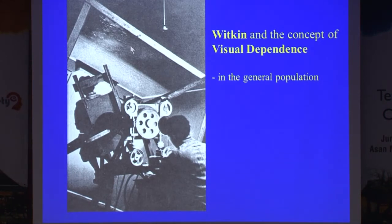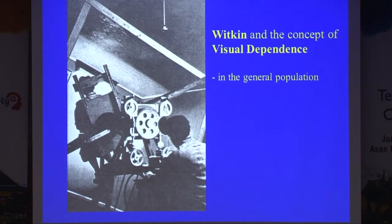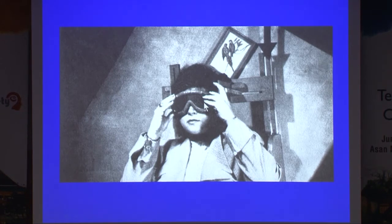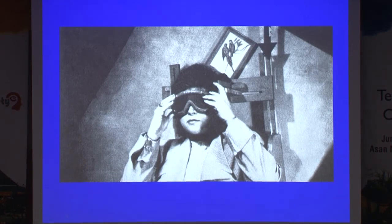What Witkin had was a room that could be tilted, and subjects sat on a chair that could also be tilted. He would blindfold people — these are original pictures from Witkin in the 40s — then tilt people, and with eyes shut they had to say when they felt upright. This normal subject here, when blindfolded, correctly indicated the direction of the gravitational vector.